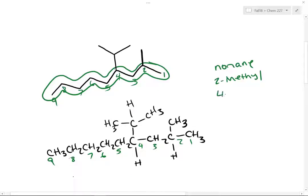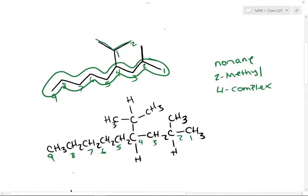So we have at carbon 4 a complex substituent. We need to name that complex substituent and then include it in the name. Looking at the substituent — it's this piece right here — we're going to start numbering the carbons from the first carbon that's bonded to the parent, which would be carbon 1. Going in either direction you find a second carbon, a methyl. So that complex substituent is going to be named as an ethyl — not an ethane because it's still a substituent. Off of carbon 1 there is a methyl, so we're going to have a 1-methyl. That substituent is going to be a 1-methylethyl.